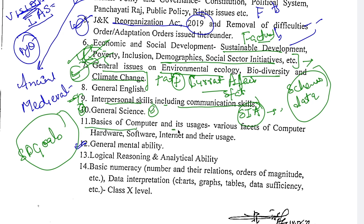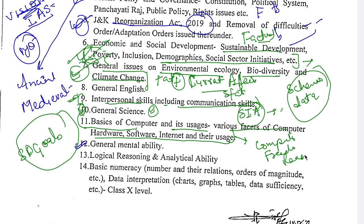Then your basics of computer and its usage — various facets such as hardware, software, internet and their usage. This syllabus topic will start from 15th August. Your computer portion will start then, while the freedom struggle is running side by side, and your reasoning portion is currently running. Below in the description box, you will get my Telegram group link — you can join the Telegram group where I will notify you. The syllabus will come before the week.